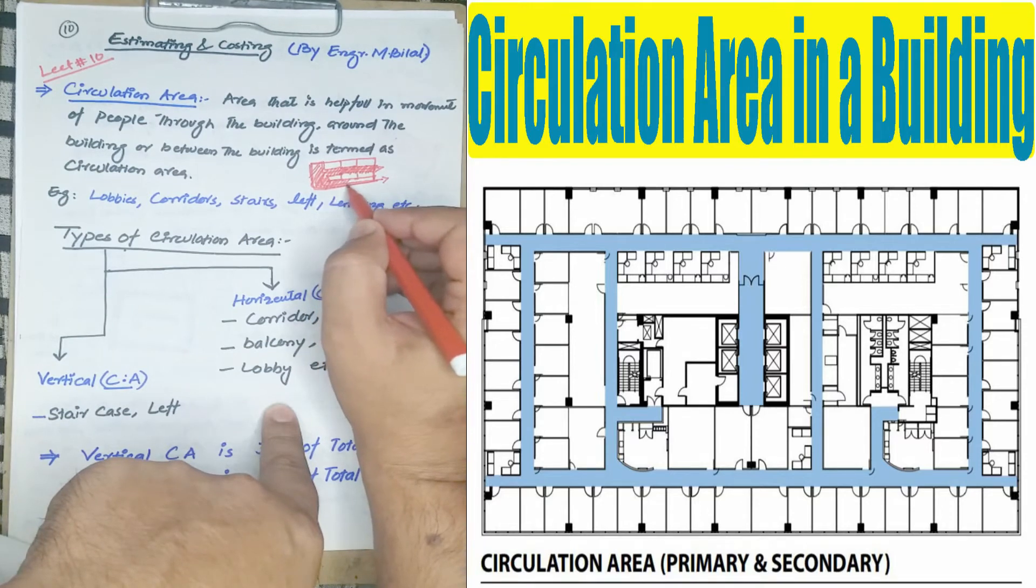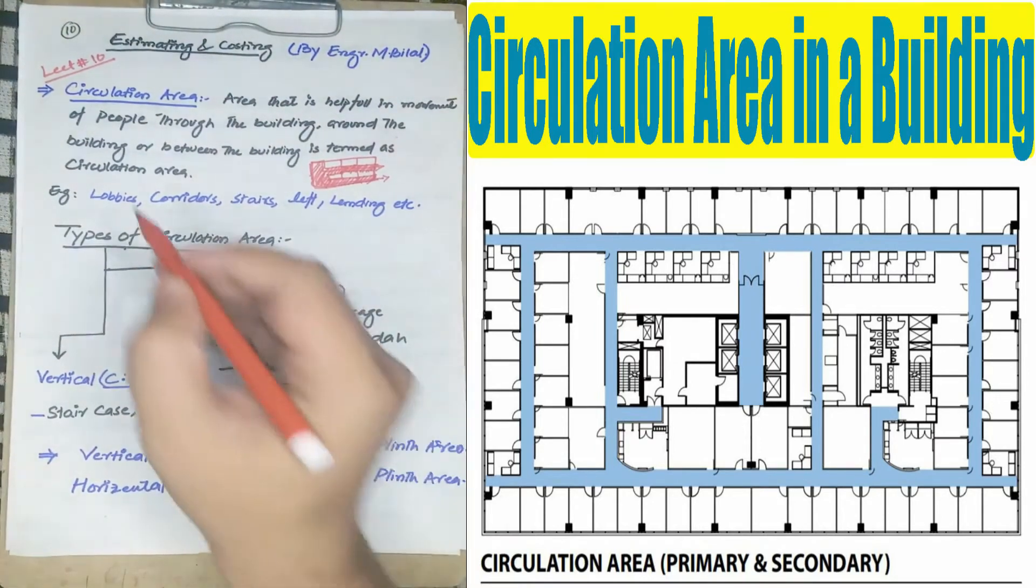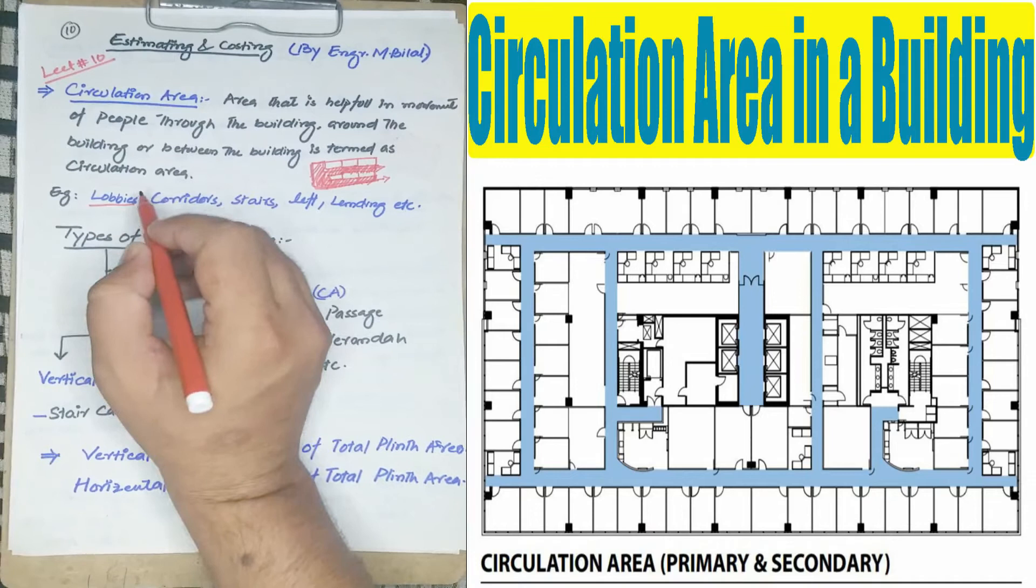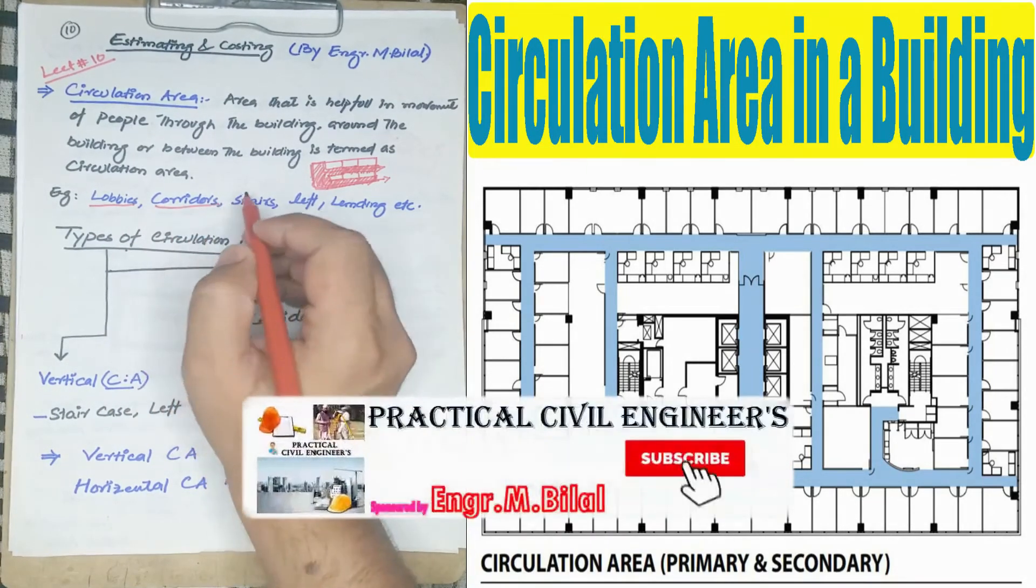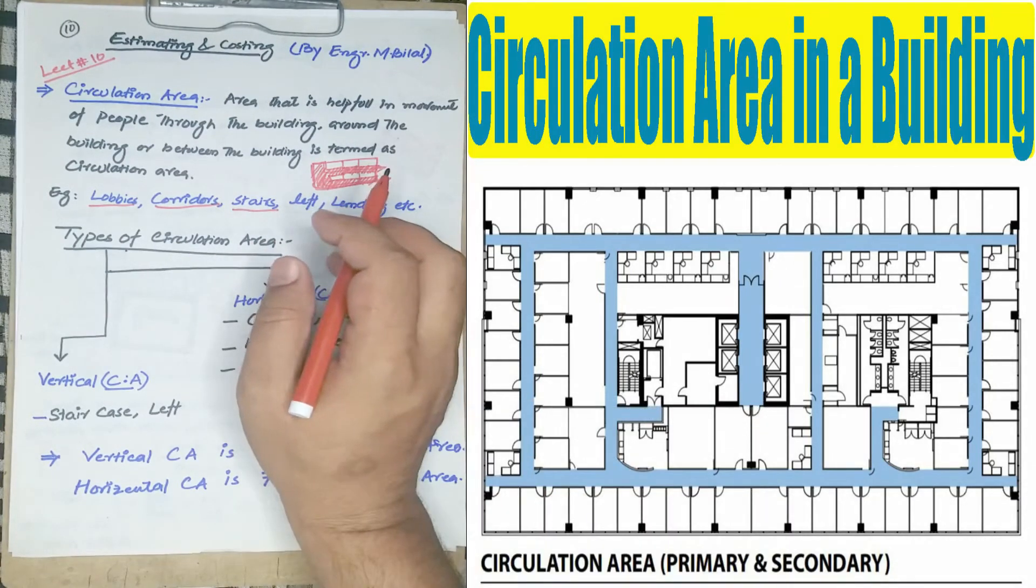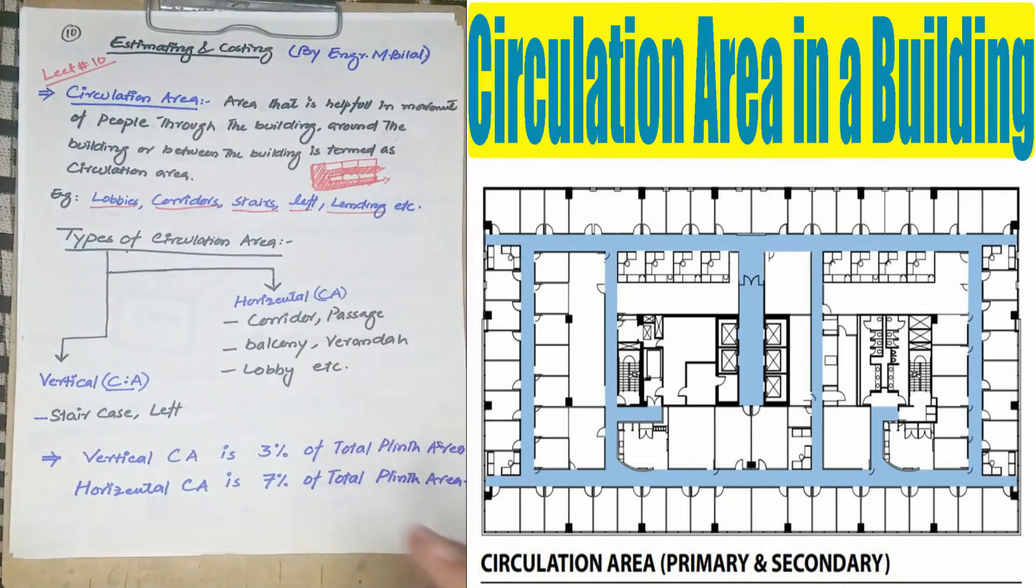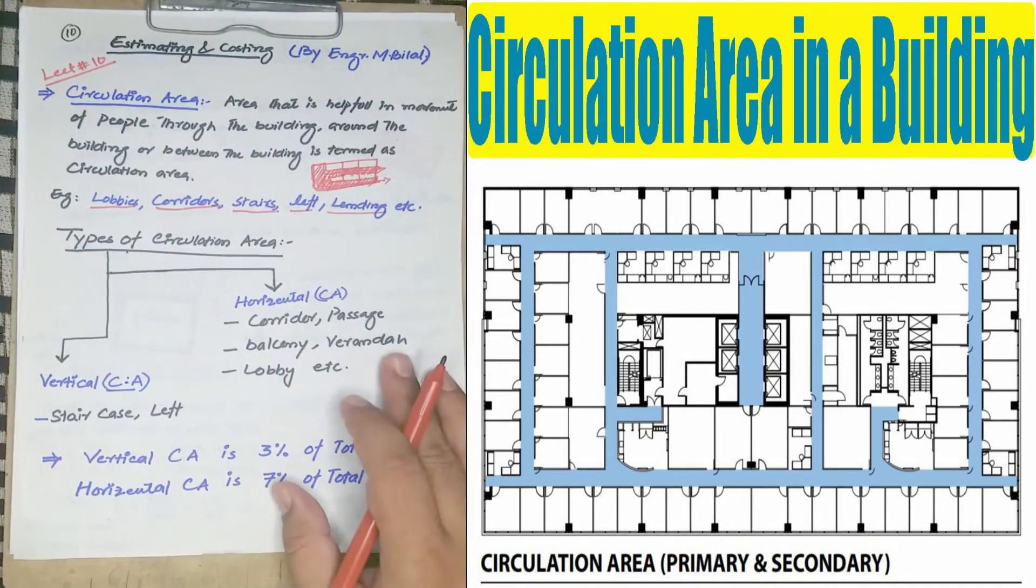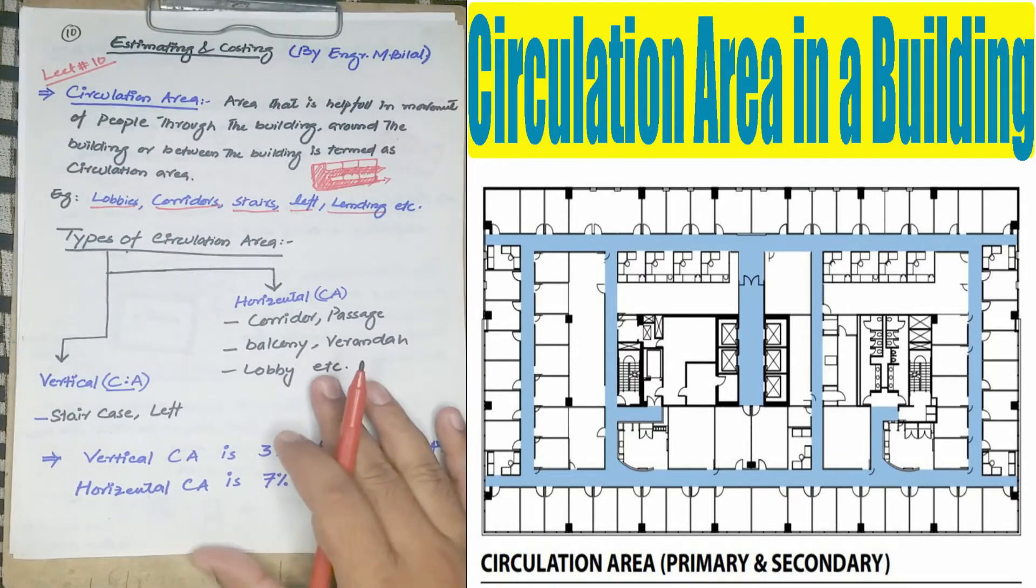And the site area, which is called setback area, is also called a circulation area. So lobby is included in the circulation area. Corridor is also included in the circulation area. Stairs are circulation area, and lift and landing when we provide in the stairs.